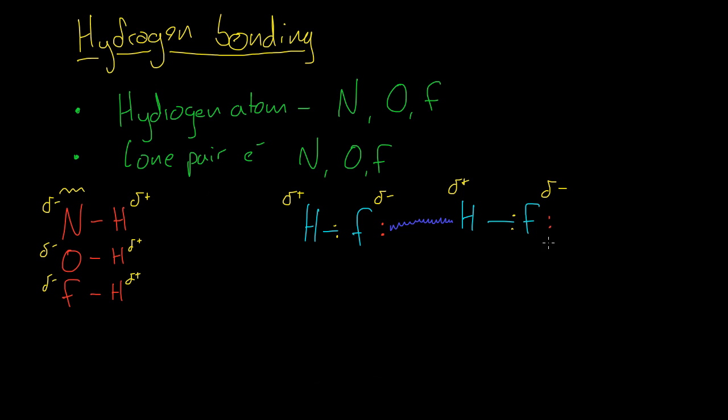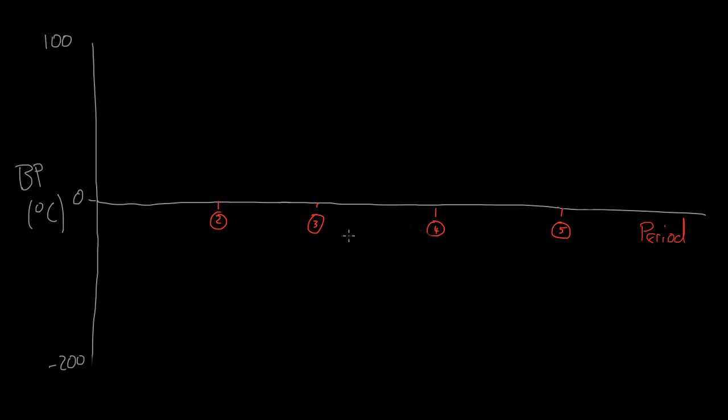So it's all well and good knowing the theory behind this, but there is evidence for this hydrogen bonding and it involves looking at the boiling points again of various substances. So on our y-axis we have our boiling points and on our x-axis we have the periods of the periodic table, so the numbers at the top of the periodic table. And on this we can plot the hydrides of group 4, 5 and 6. Now the hydrides are where you have the element and then that's bonded to as many hydrogens as it can. So in the example of carbon, that's CH4.